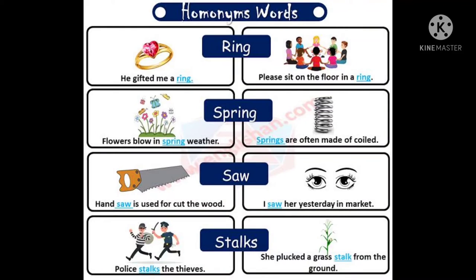Let us see some more examples children. Ring: He gifted me a ring. Please sit on the floor in a ring. Flowers blow in spring weather. Springs are often made of coiled metal. A handsaw is used to cut wood. I saw her yesterday in the market. Police stalks the thieves. She plucked a grass stalk from the ground.